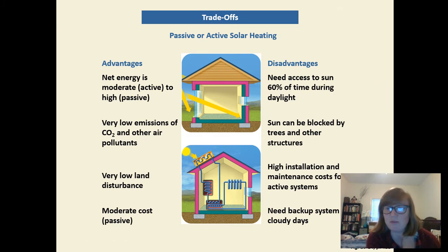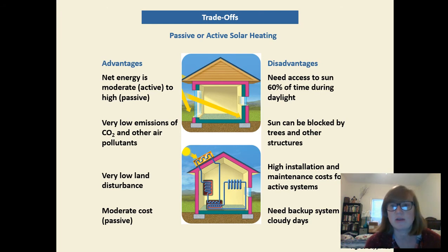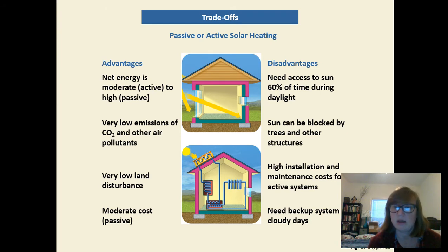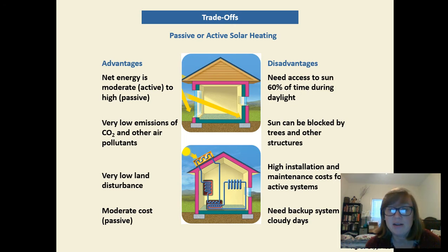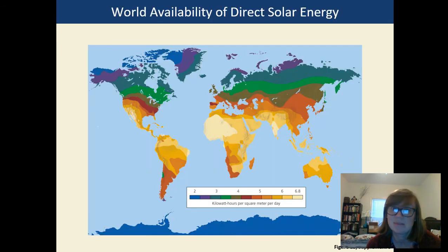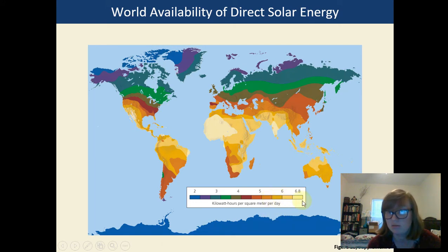In Buffalo, New York, for example, you really can't have solar as your main energy source because it's gray there most of the time, even in summer. The sun can also be blocked by trees or other structures. An active solar system costs a lot to install and maintain — you need a special company for that — and you need a backup system for cloudy or rainy days. You can't just rely on the sun. Here's a world map of direct solar energy availability: you need at least six hours a day, so you should be in the orange zone or better.